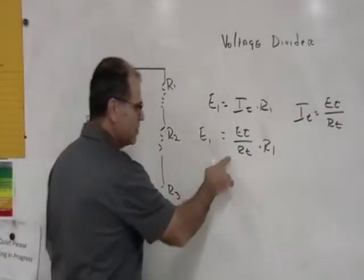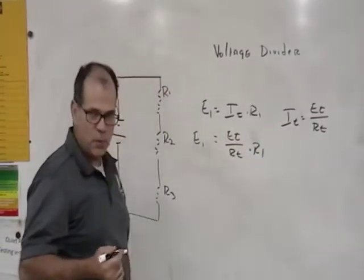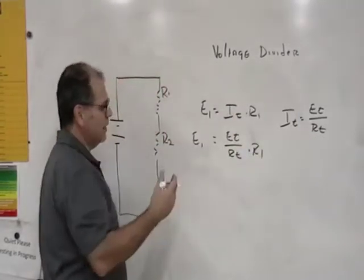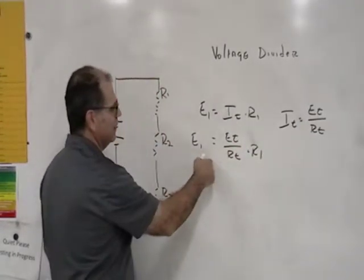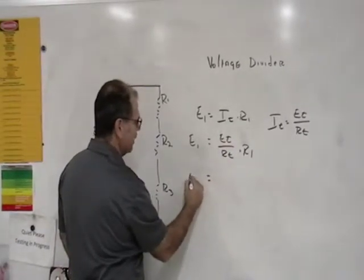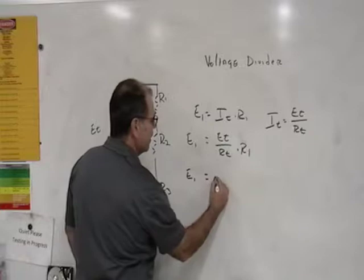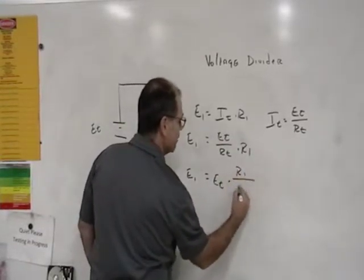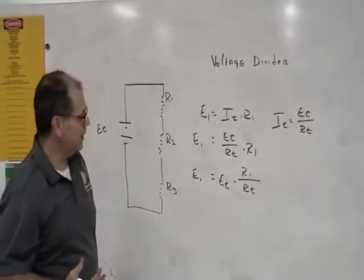So this in essence right here is the law of proportionality, which is based on Ohm's law. They go a little further and they break this ET over RT and they kind of rewrite it a little bit different. They'll say ET times R1 divided by RT.